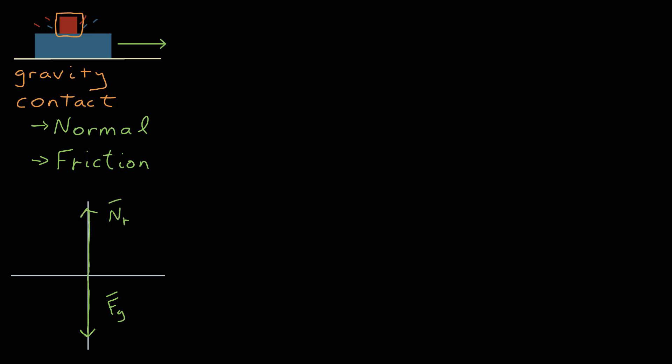There's a normal force that points perpendicular to the plane of contact from the agent to the object, which is blue to red in this case. So I have a normal force of blue on red. Now there's a frictional force parallel to the plane of contact of blue on red.